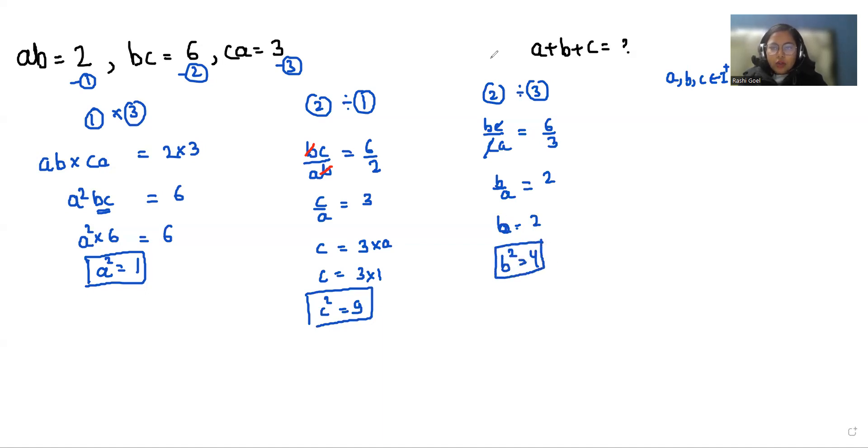Now we are going to use a very famous identity, that is A plus B plus C whole squared. The formula is A squared plus B squared plus C squared plus 2AB plus 2BC plus 2CA.